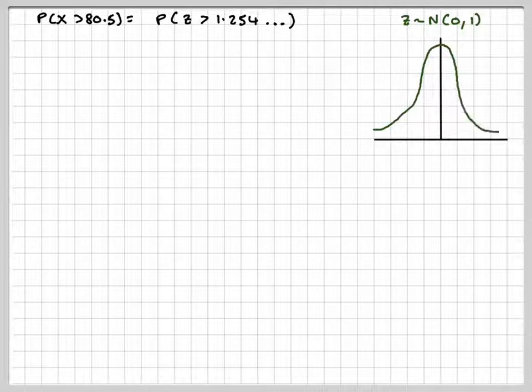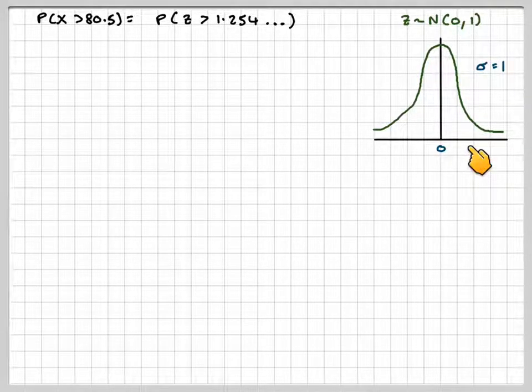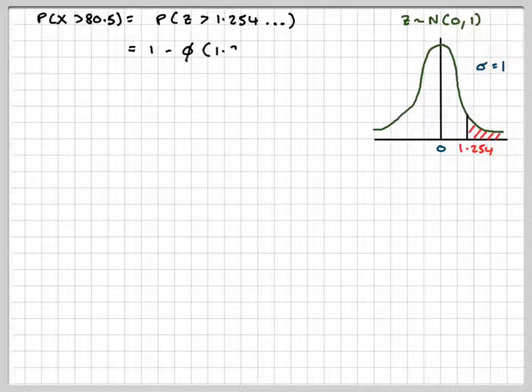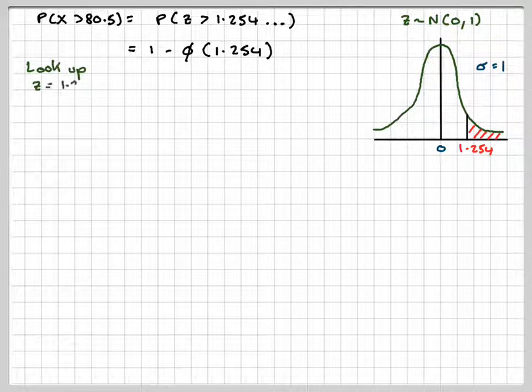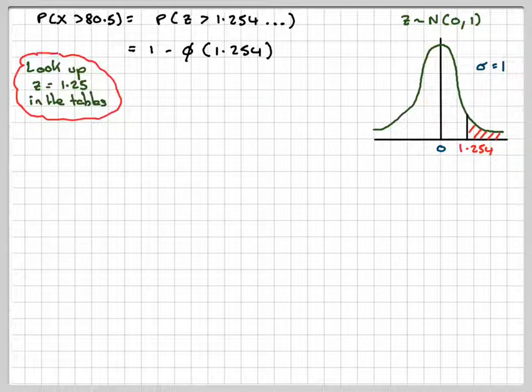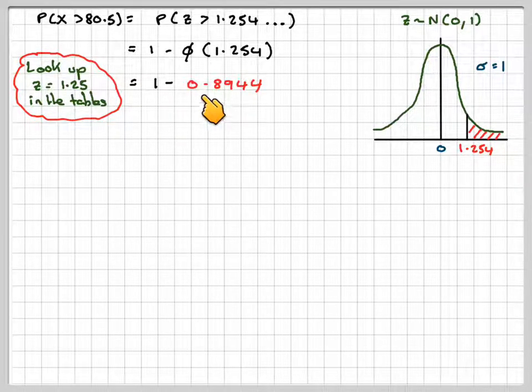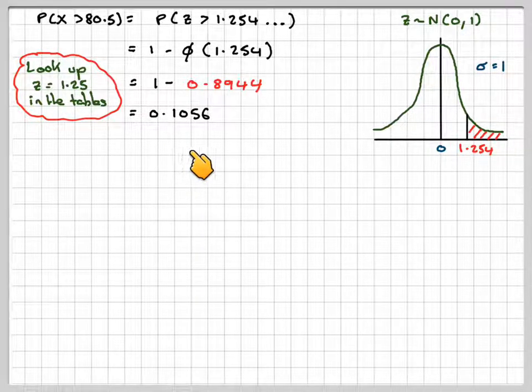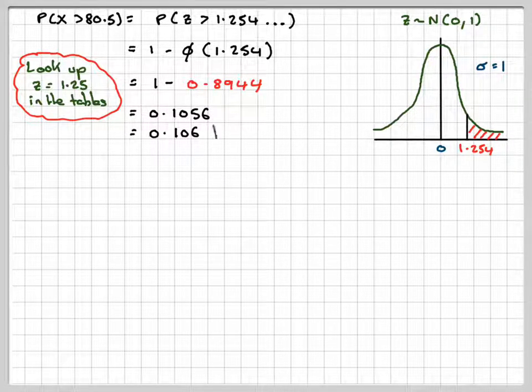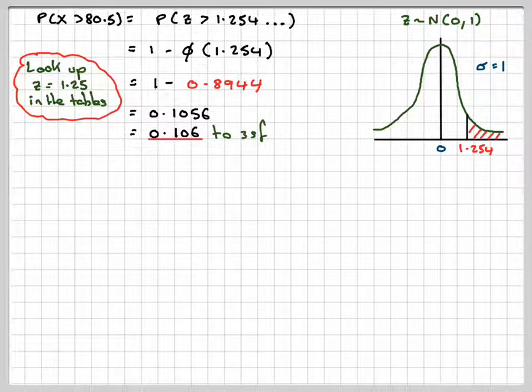I like to use a graph. So 1.254 is somewhere over here. We want more than, so we're going to have to do 1 minus phi. This means look up in the tables 1.254. We're going to look up Z equals 1.25 in the tables. It's going to give me 1 minus 0.8944, which gives me a probability of 0.106 to three significant figures.